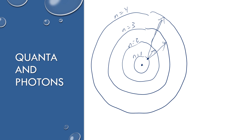The same is true in reverse. If you're starting at a high energy level and moving down, it's going to release photons. The more energy levels it falls, the greater the energy of those photons. We're going to relate the difference in energy between the energy levels of hydrogen to the atomic emission spectra based on the photons that can be emitted.